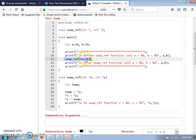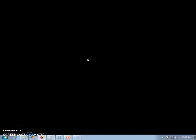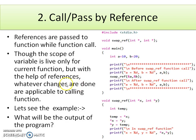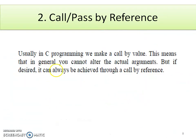Since x holds the address of variable a and y holds the address of variable b, whatever operations we perform are done at those address locations. The changes are done at the address locations, so they reflect in the calling function. That's why passing address locations (references) makes it feasible to reflect changes in the calling function.